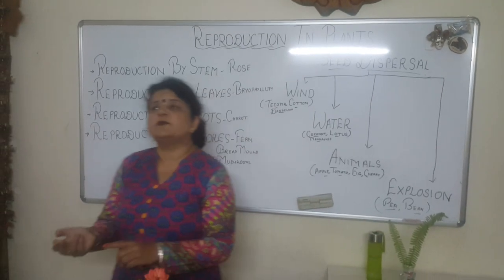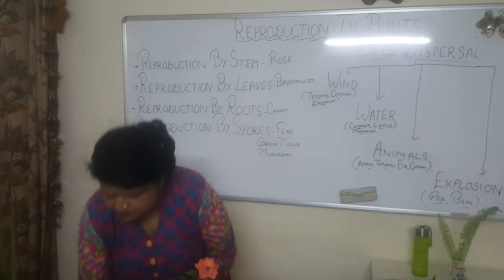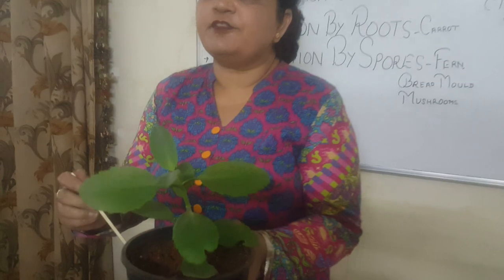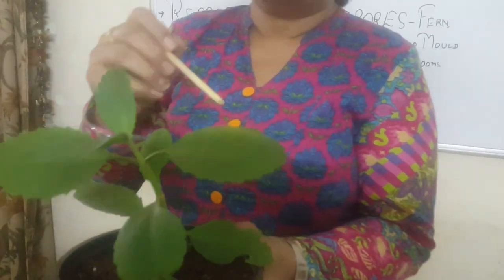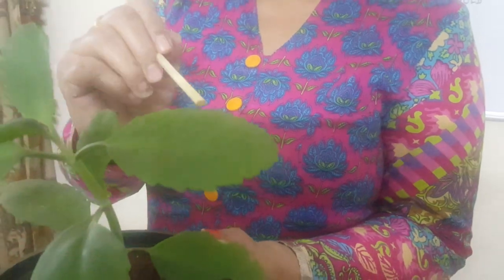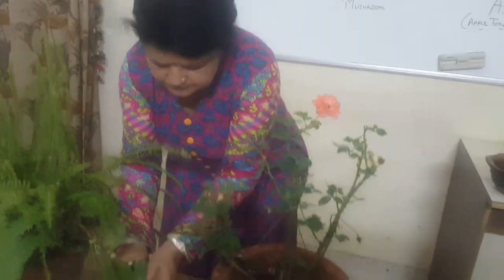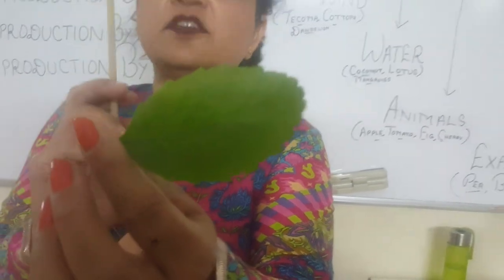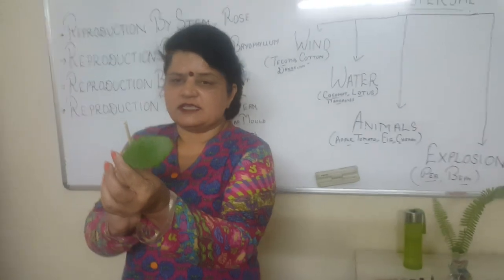Now we'll move on to reproduction through leaves. I've taken a bryophyllum plant — the leaves are thick and leathery, and these leaves have so many notches in them. I'll show you one of the leaves. After plucking a leaf, you can see there are nearly 10 to 15 notches in just one leaf.